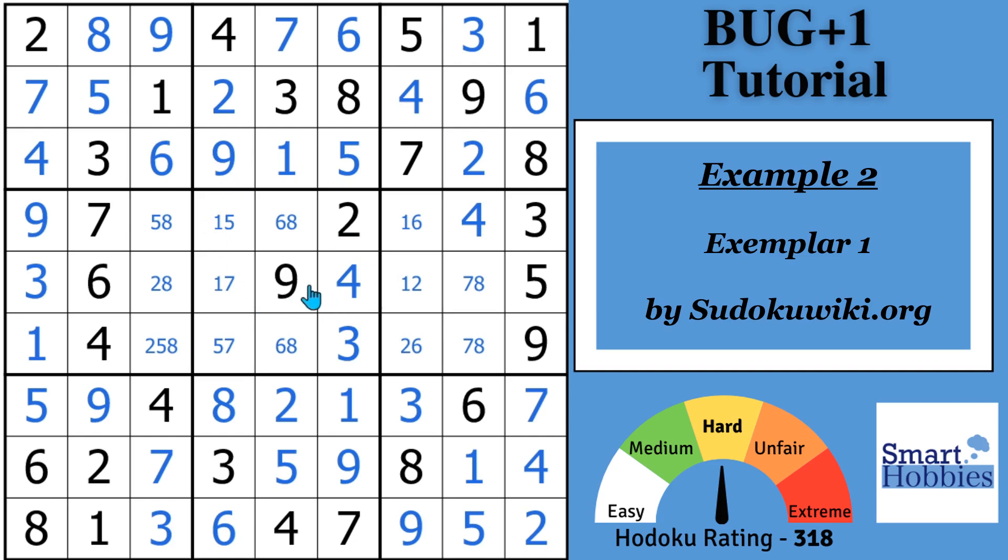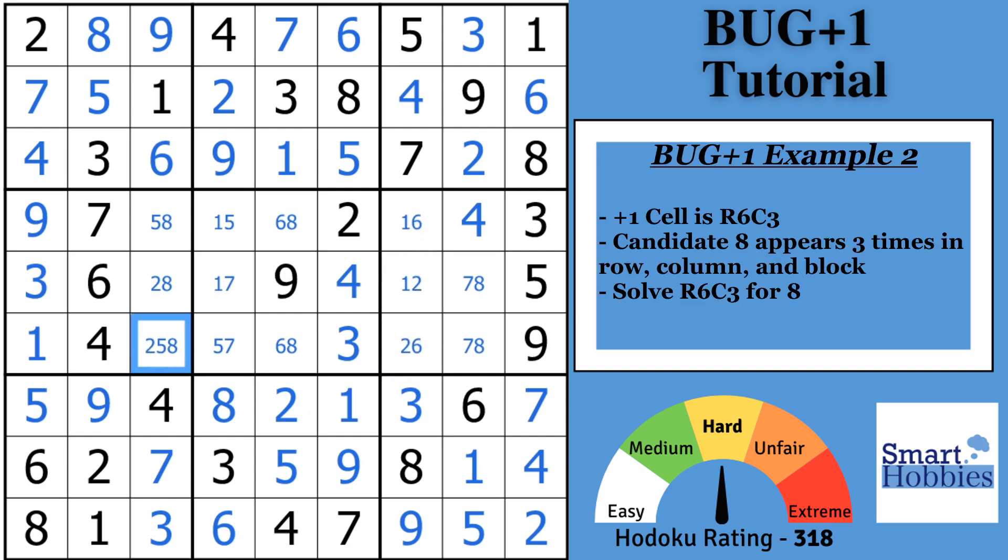Okay. For my second example, this is also from Sudoku Wiki. It was exemplar number one, the first practice puzzle. So I'm going to give you a few seconds. See if you can spot the bug plus one cell and how to solve it to move forward. Okay. Congratulations. If you looked and noticed that all these cells have two candidates, except for this cell right here. And if you took it a step further and said, okay, I can see an eight in three cells in the column and in the block and across the row. So I know that you can solve this cell for an eight. Congratulations. You understand how bug plus one works.